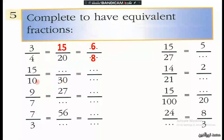Here we have 10 multiplied by 3, and the product is 30. Then we multiply 15 by 3: 15 times 3 is 45. Then we could divide by 5: 15 divided by 5 is 3, and 10 divided by 5 is 2. Of course, there are a lot of different answers.